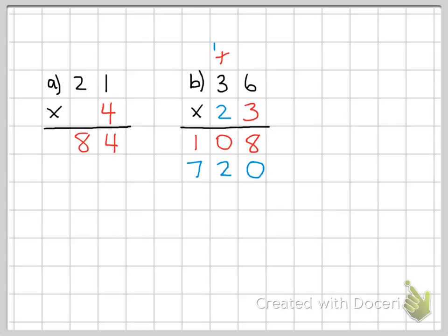Almost done. Next, we add the two numbers together. 8 plus 0 is 8, 0 plus 2 is 2, and 1 plus 7 is 8. So our answer to 36 times 23 is 828.